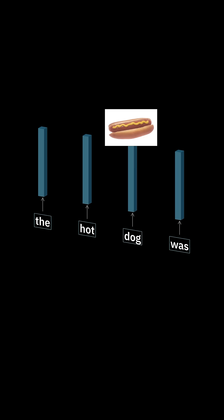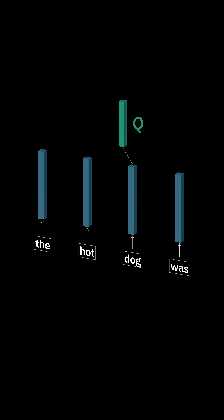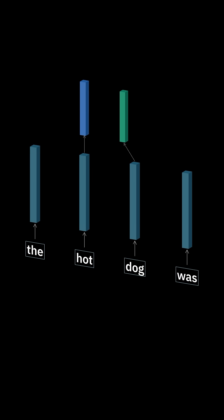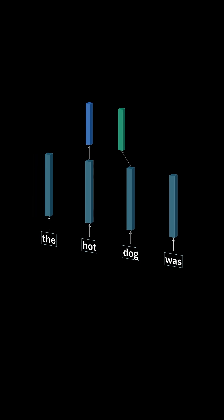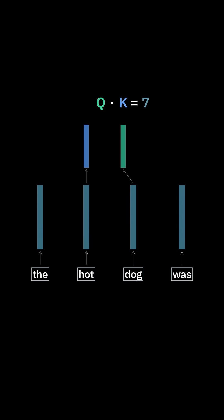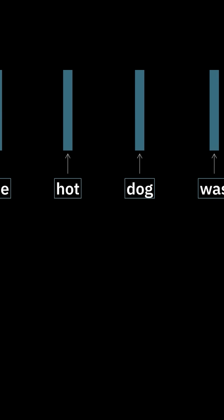To turn this into this, let's project dog's embedding to a new vector called Q that says, 'what do I care about?' Then project hot into a vector called K that says, 'here's what I provide.' If we take the dot product of Q and K, it says how much dog should pay attention to hot.